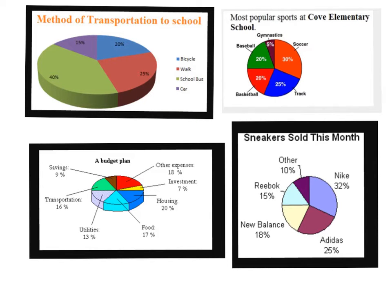I did a Google search on circle graphs to see what I could find and what different circle graphs show. Here's one showing the method of transportation to school. Somebody surveyed different students and asked what do you use to get to school? 20% said bike, 25% walk, 40% school bus, and 15% car. So a circle graph can be used to show what percent of people chose a certain activity. If you look at the next circle graph, the most popular sports at an elementary school, you can see the different sports and what percent of people chose that sport.